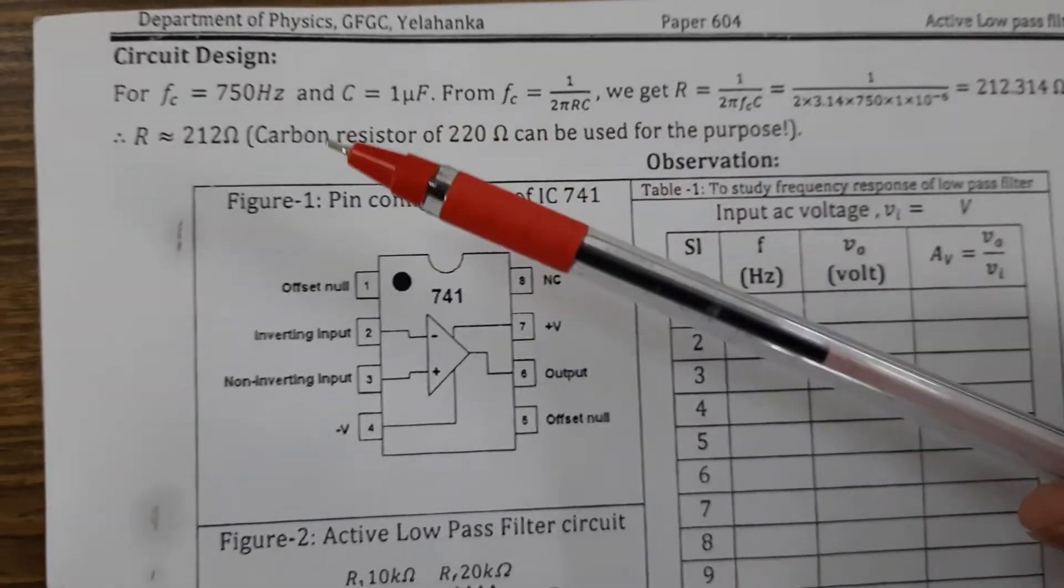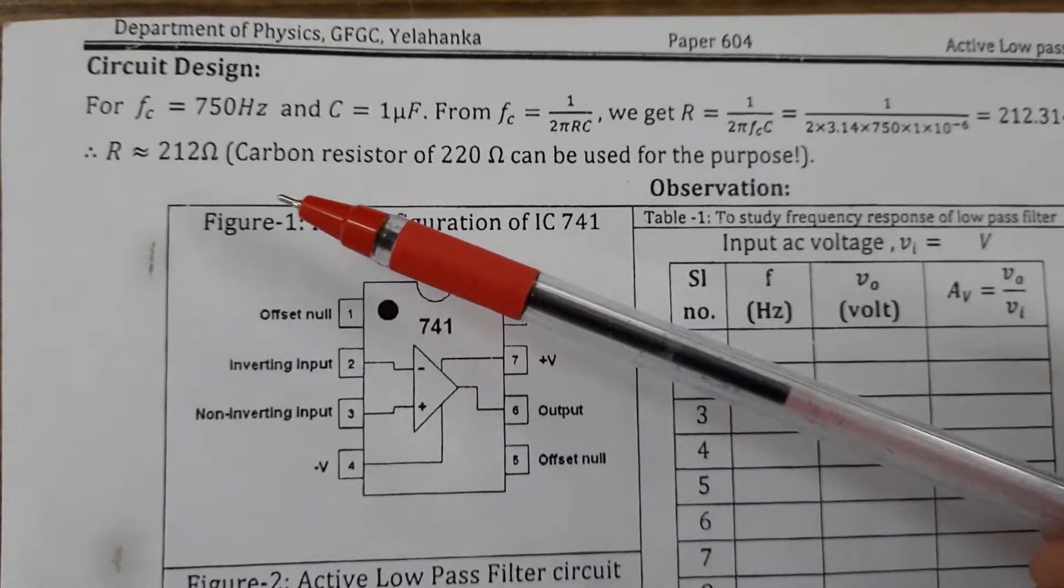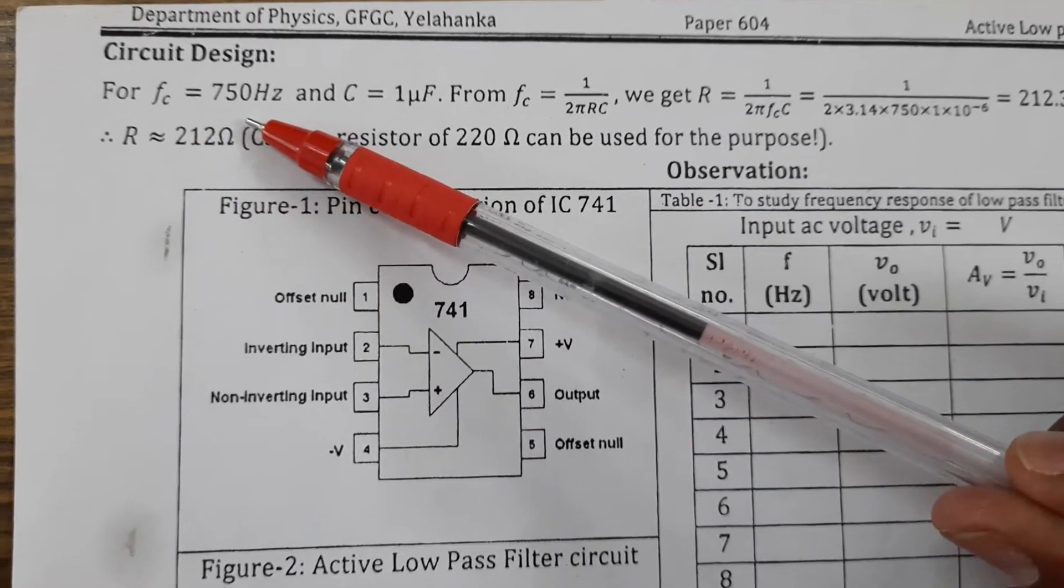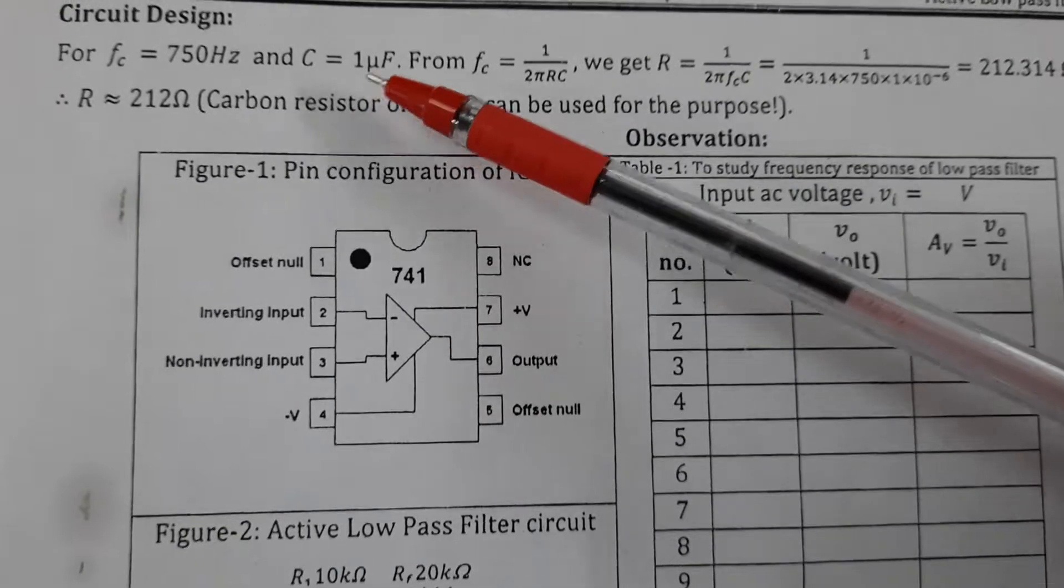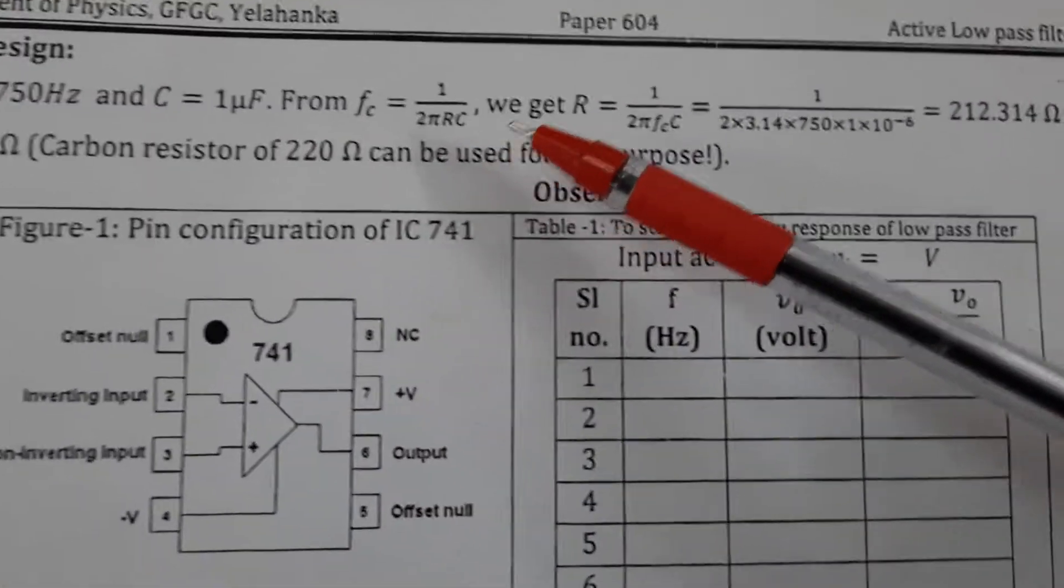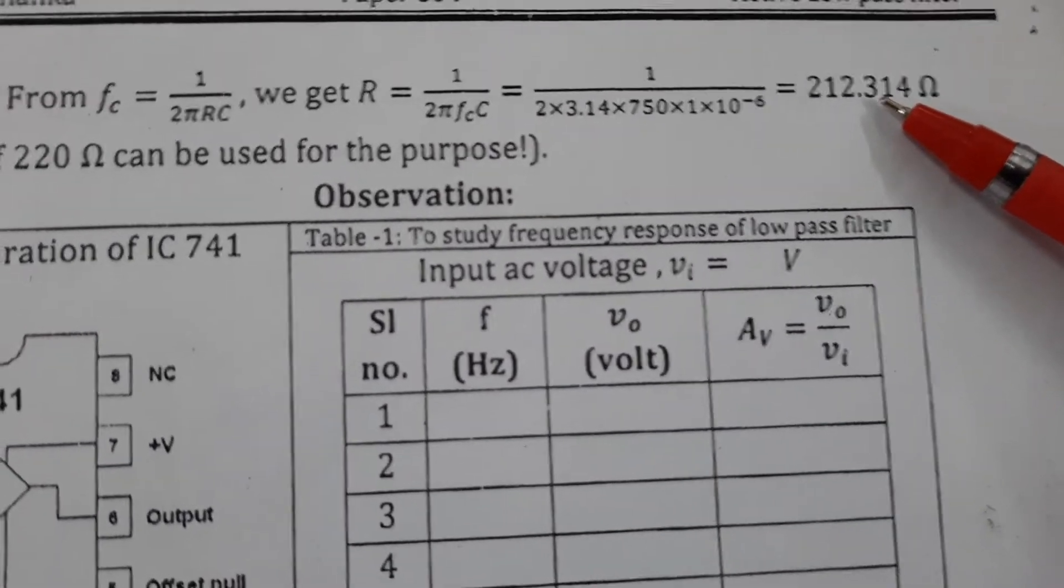Let us look at the design part of the circuit. For a cut-off frequency of 750 hertz and a capacitance value of 1 microfarad, from this formula, the R turns out to be 212 ohms.